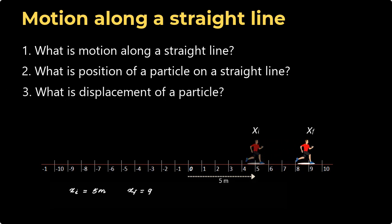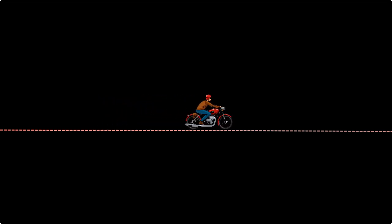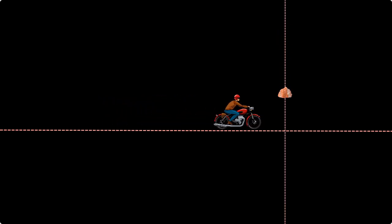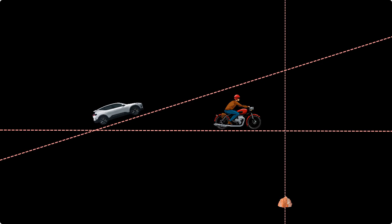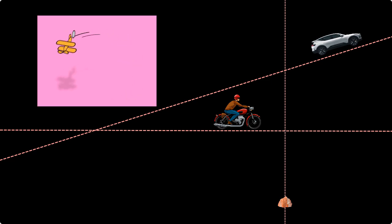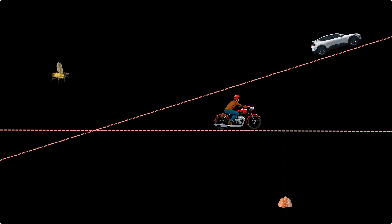So let's get started. When we say an object is undergoing motion along a straight line, it can be in any direction as long as it is straight. It can be horizontal like a motorbike moving on a straight track. It can be vertical like a rock falling under the force of gravity. Or it could even be slanted like a car moving up a hill in a straight line. All you need to remember is that the object should be moving in a straight line and not in a curved path in two or three dimensions.